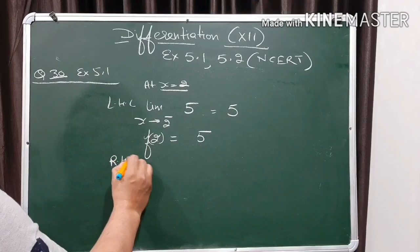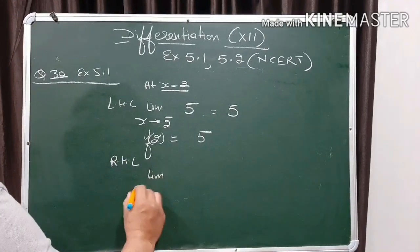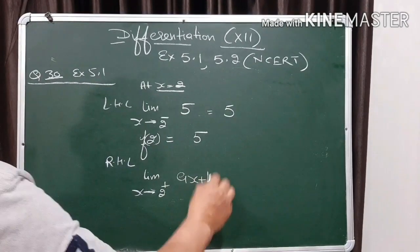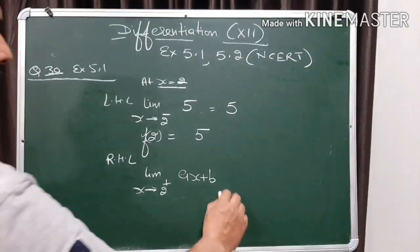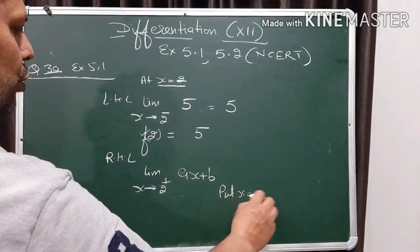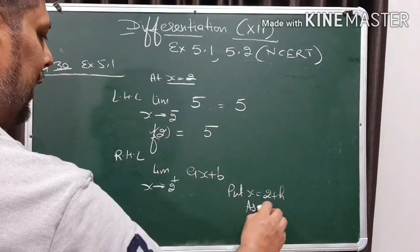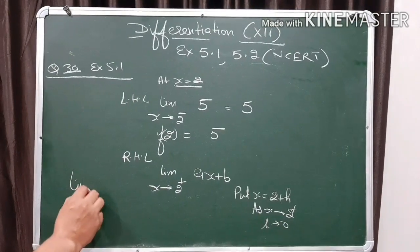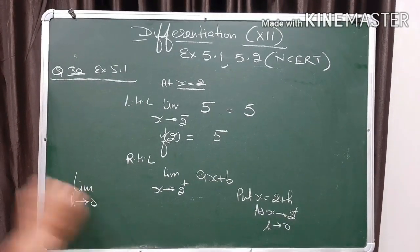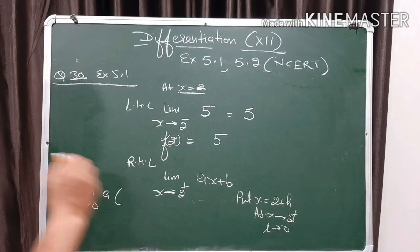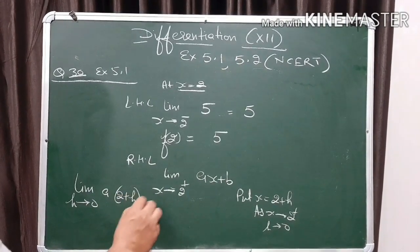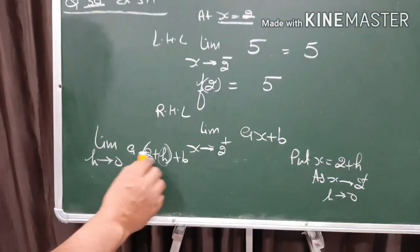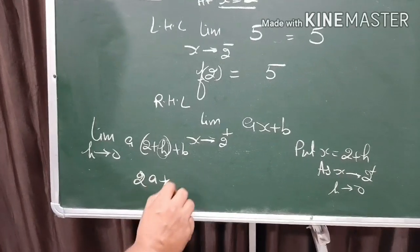Now we'll go for the right hand limit. As x approaches 2 positive, the function is ax plus b. We put x equals 2 plus h; as x approaches 2 positive, h approaches 0. So this becomes limit h approaches 0 of a times (2 plus h) plus b. As h approaches 0, this becomes 2a plus b.